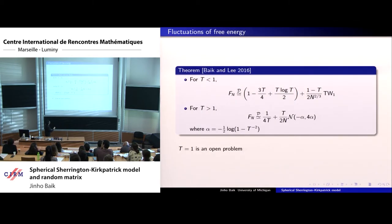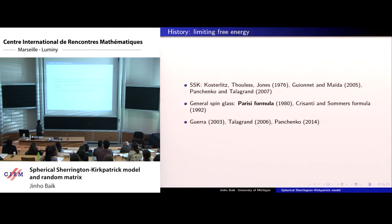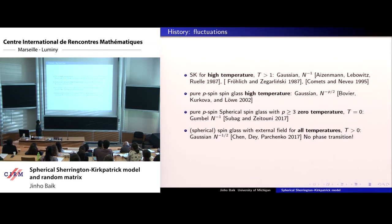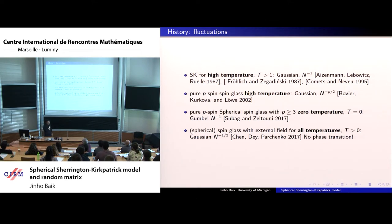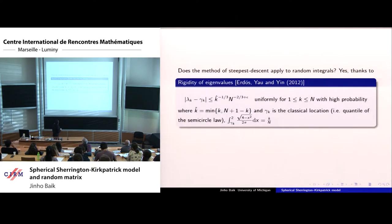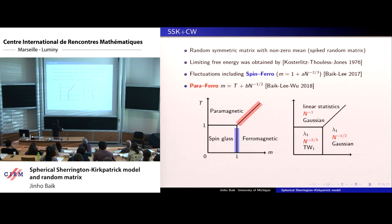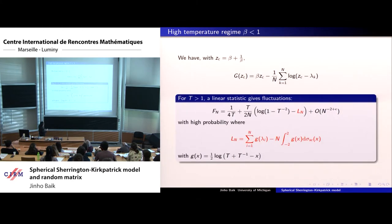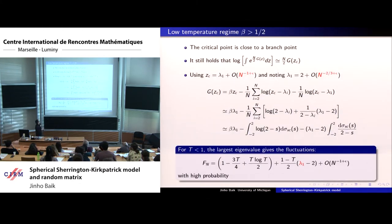It is interesting to note that the Gaussian one-over-n fluctuation was already known for the high temperature case from Aizenman-Lebowitz-Ruelle. In a sense, they were already implicitly computing linear statistics of eigenvalues, arriving at similar fluctuations without the usual tools of random matrix theory. For the low temperature case (t < 1), the critical point is very close to the branch point (the largest eigenvalue), so the steepest descent requires more care.